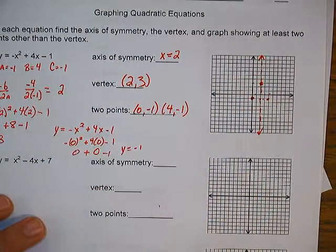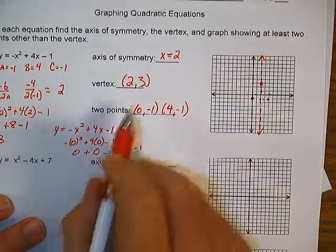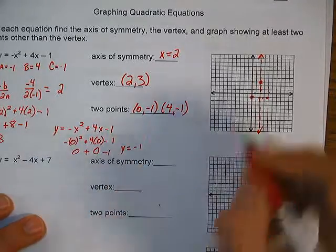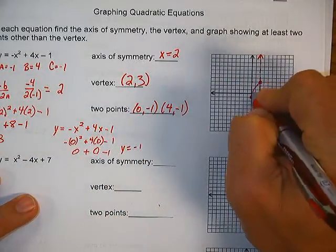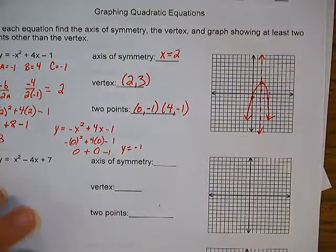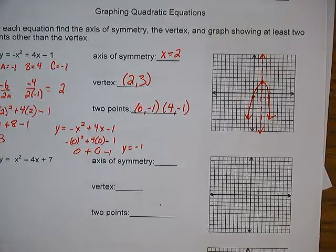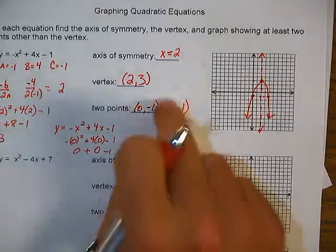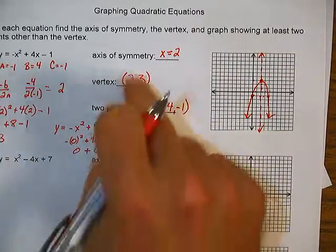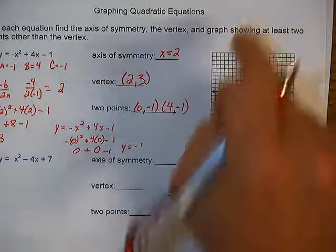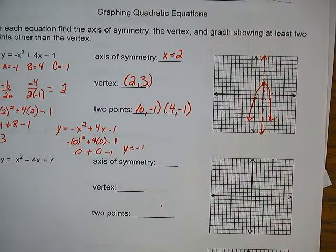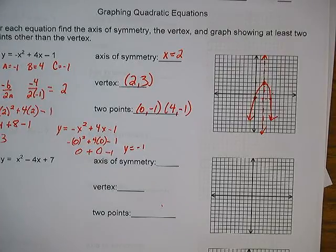Now reflect it to find the other point. It's 2 from the axis of symmetry, so we go 2 on the other side. That point is at 4, negative 1. So I have my axis of symmetry written as an equation, my vertex, and two other points. Once we have three points I can sketch my parabola. That should get you started on 6.1 — please refer to this. If you have any questions I'll be glad to answer them on an individual basis. Thank you.